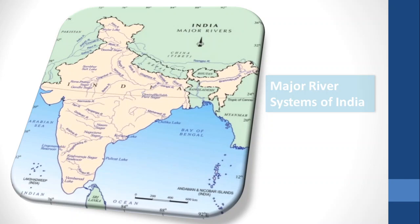Now let's look at the major river systems of India. On the western side, Indus and its tributaries — the Indus originates from near Mansarover Lake in Tibet, flows north-westward, and falls into the Arabian Sea.